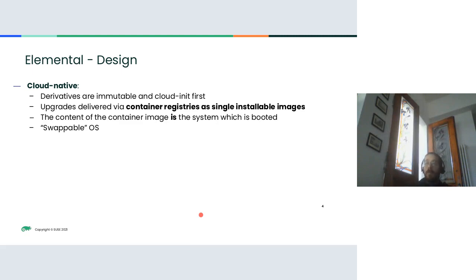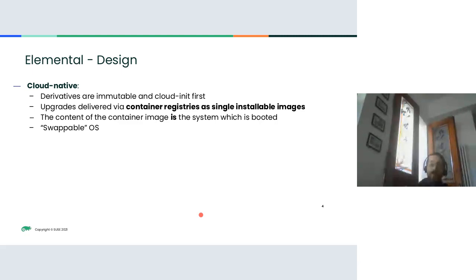A few words on the design: it is cloud-native first. The iteratives built this way are immutable and cloud-init first, meaning any configuration happens through cloud-init files. Upgrades are delivered via container registries as single installable images living in your container registry of choice — Docker Hub or a private registry. The content of the container image is actually the system which is booted, and that brings the nice effect that you can debug the image with Docker or whatever you use for dealing with containers.